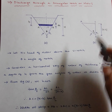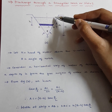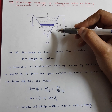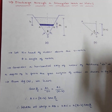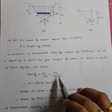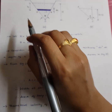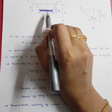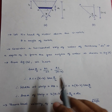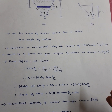From the apex to the water surface the total height is capital H, and the strip is at small h from the surface, so OC equals H minus h. Therefore, AC equals (H minus h) times tan(theta/2). Since AC is half the width of the elementary strip, the full width AB equals 2 times AC.